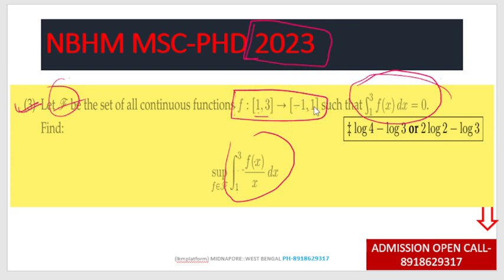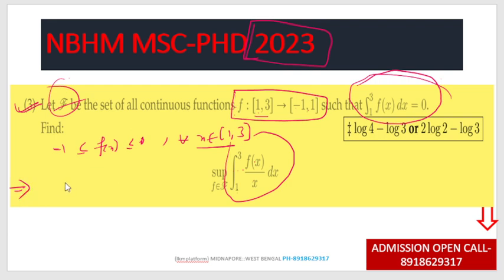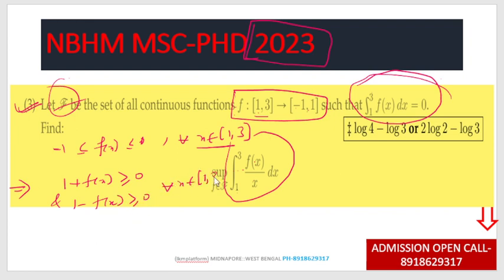Observe that f(x) is at most 1 in absolute value, that is -1 ≤ f(x) ≤ 1 for all x in [1,3]. So 1 + f(x) ≥ 0 and 1 - f(x) ≥ 0 for all x in [1,3].